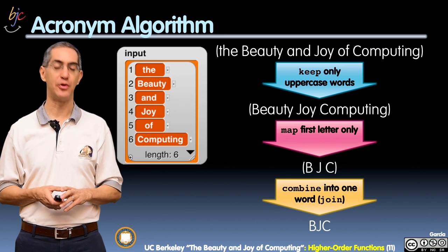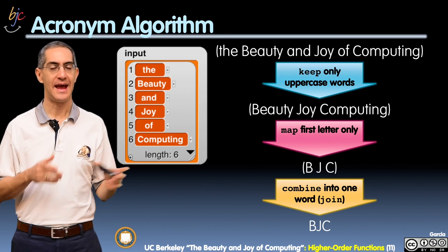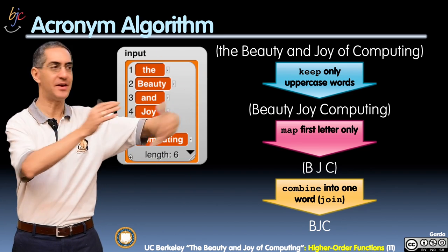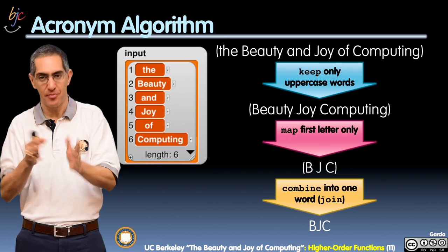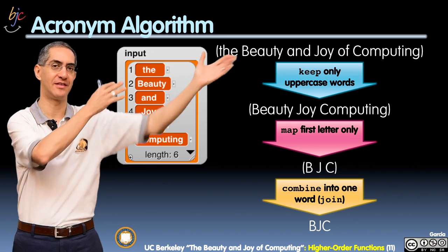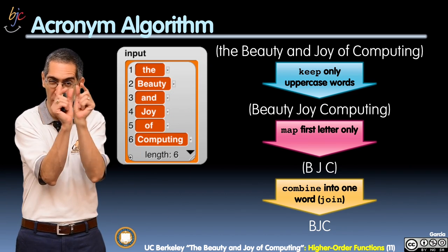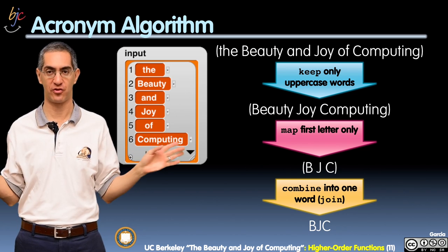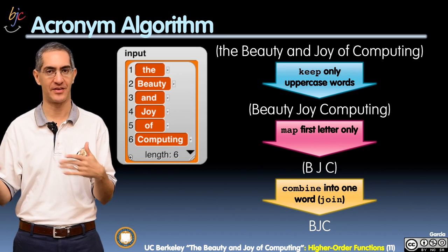So the input is going to be 'the Beauty and Joy of Computing' and the output is going to be BJC. The input could be any phrase and the output should be the acronym of the phrase, you know USA, United States of America should be USA. All the small little words that in our version are going to be lowercase, we're going to strip out. That's the way we're handling these.